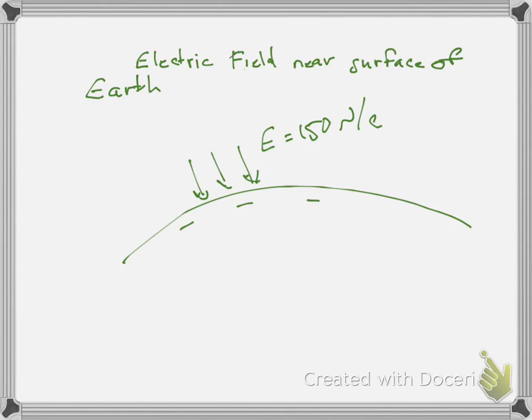Let's do a quick example. The Earth has an electric field — we treat the Earth as neutral, but it's actually slightly negatively charged, and the ionosphere is positively charged. So there's an electric field pointing downward near the surface of the Earth, approximately 150 newtons per coulomb. Assuming the field is approximately constant and downward, through what displacement would you have to move to have a 9-volt potential difference — equivalent to a 9-volt battery?